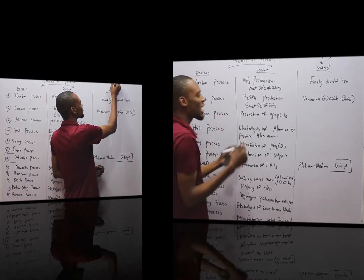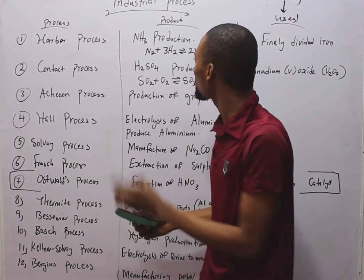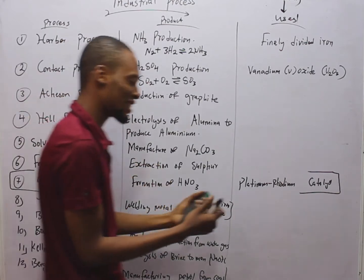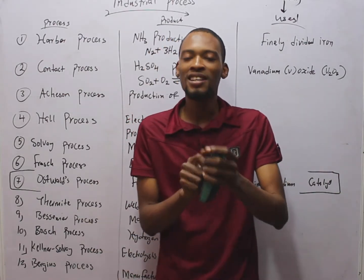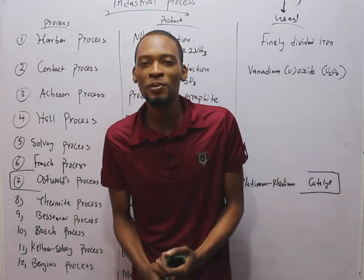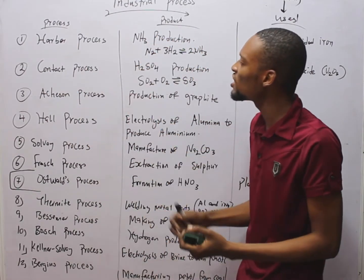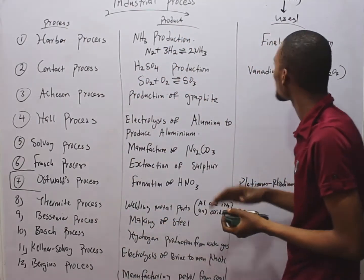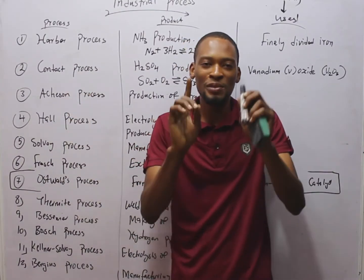The Haber process is used in the manufacture of ammonia: N₂ + 3H₂ → NH₃. So if you are asked which industrial process is used in the production of ammonia — is it (a) Haber process, (b) Contact process, (c) Solvay process, or (d) Hall process — the answer is Haber process. The catalyst used in the Haber process is finely divided iron.